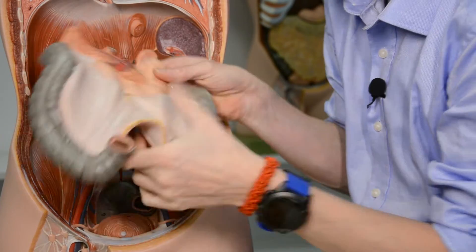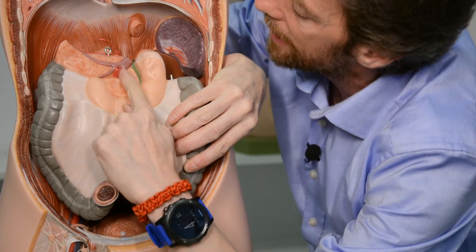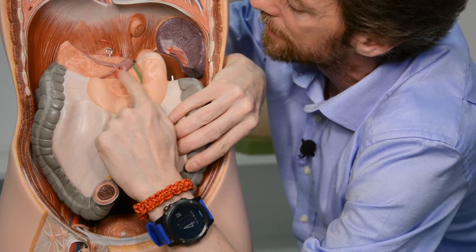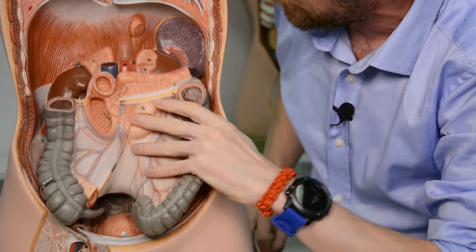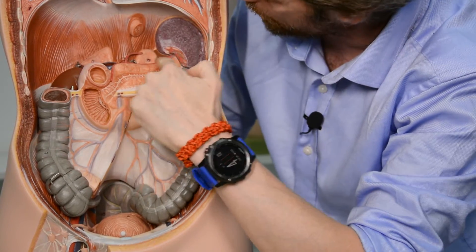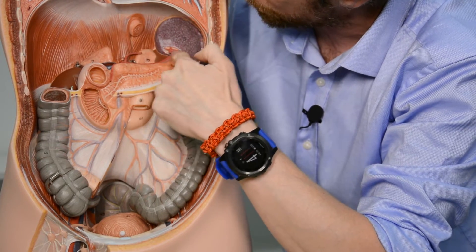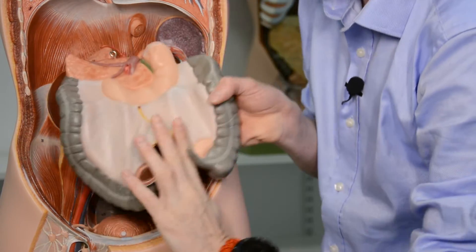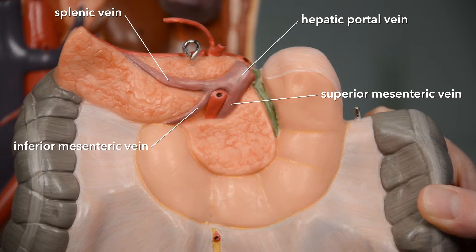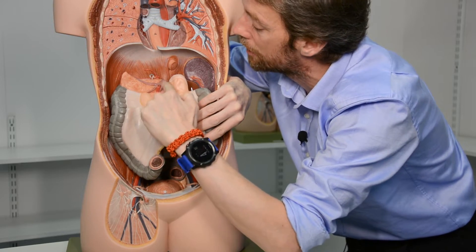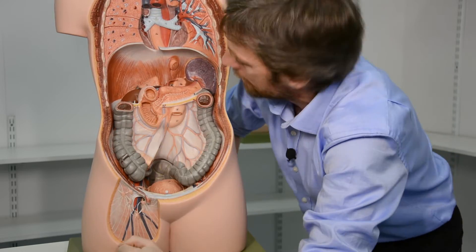If we flip that around, that is the superior mesenteric vein. So inferior and superior mesenteric veins are coming together. Then we've got this third vein — the splenic vein — so the spleen is draining its blood through the splenic vein, which runs the length of the pancreas, posterior to the pancreas, joining the other two. They all meet up together, posterior to the pancreas, and become the portal vein.